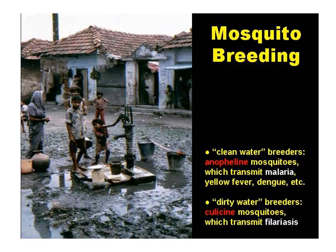With mosquitoes we have two groups very broadly: the clean water and the dirty water breeders. The clean water breeders are the Anopheline mosquitoes and they transmit malaria, yellow fever, dengue fever, and so on. The dirty water breeders are the culicines and they transmit filariasis.